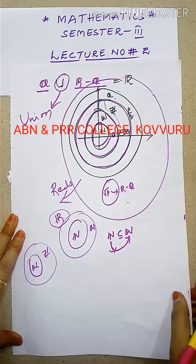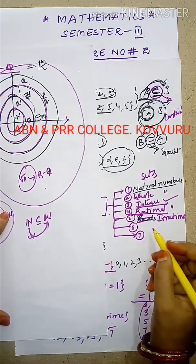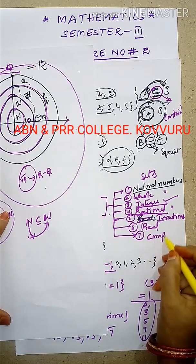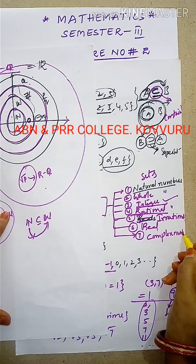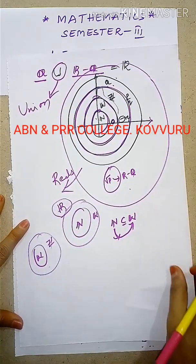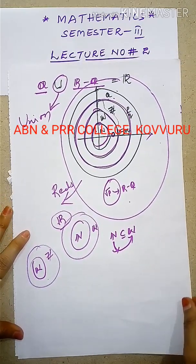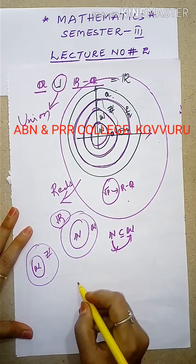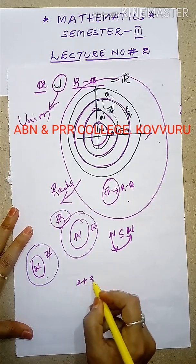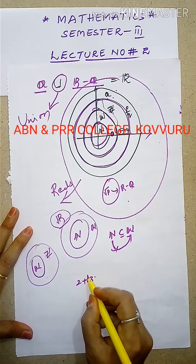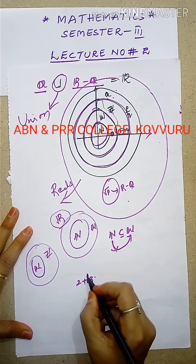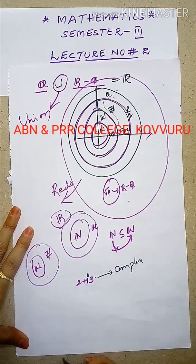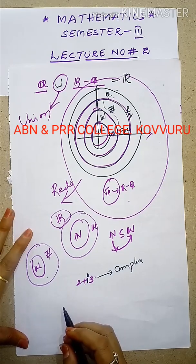Next, the remaining part of the number system: complex numbers. For example, a number like 2 plus 3i — where i is an imaginary number — is called a complex number.